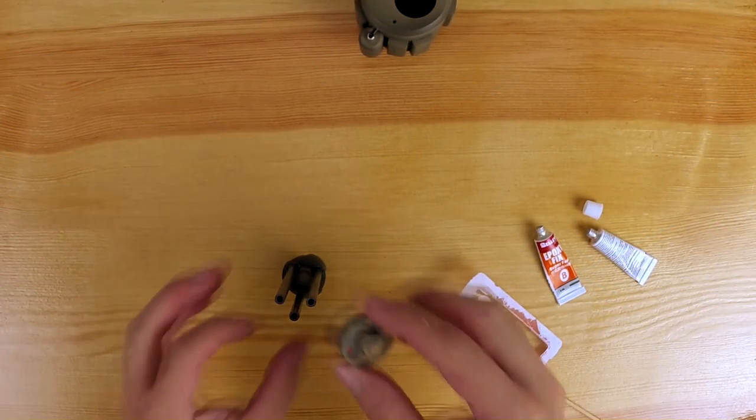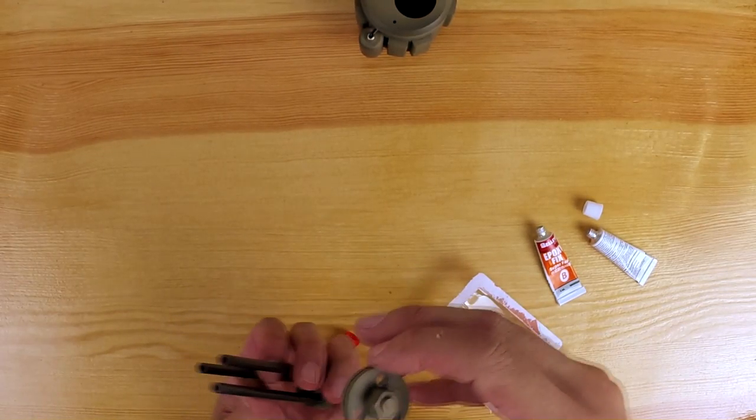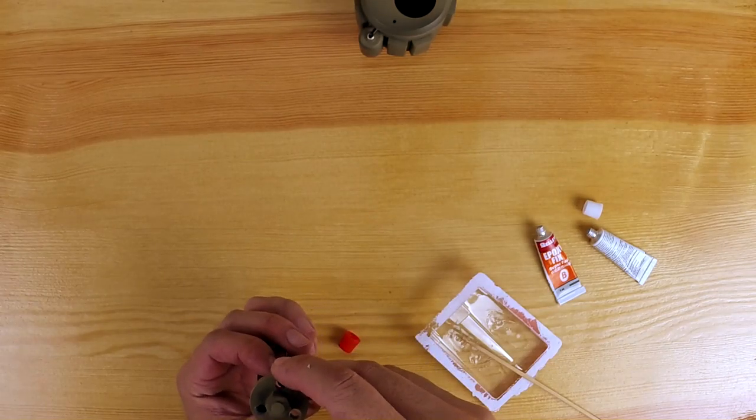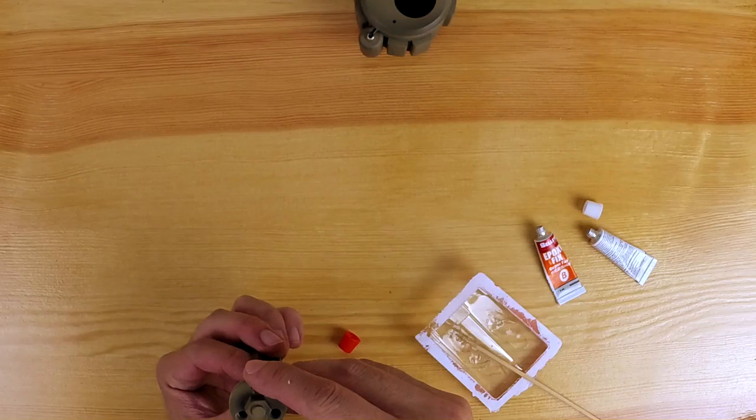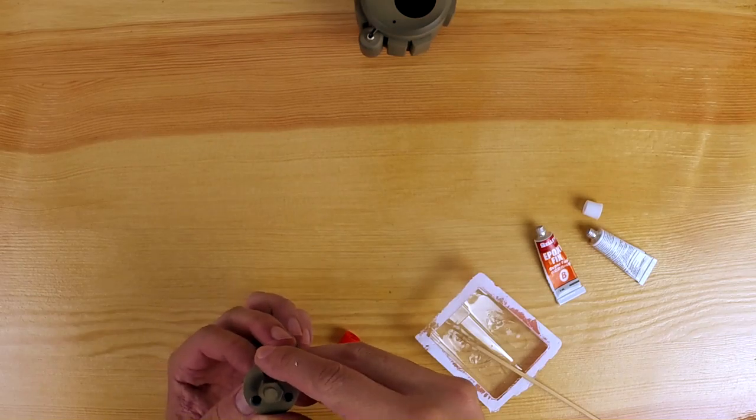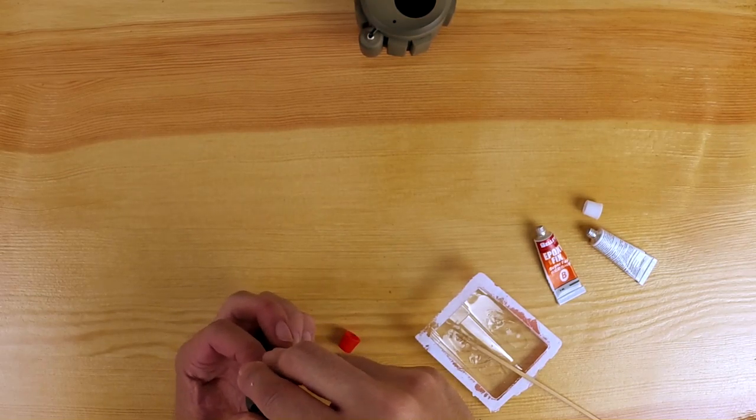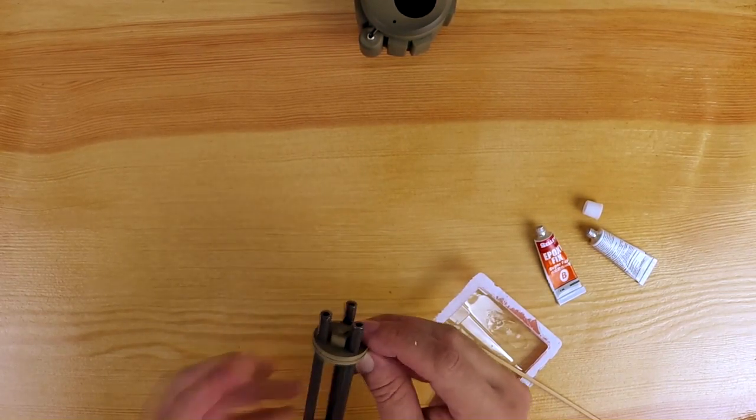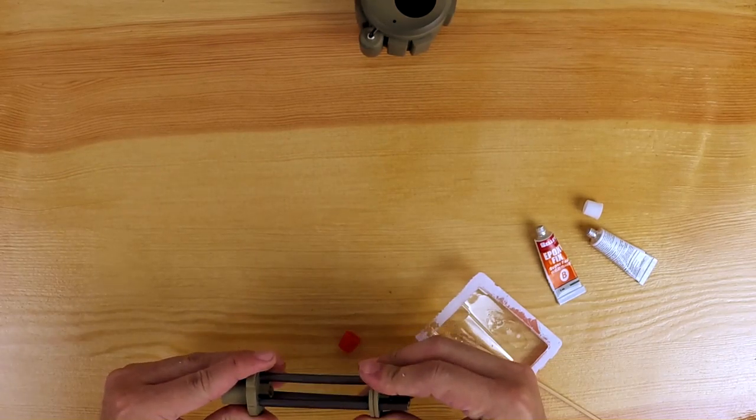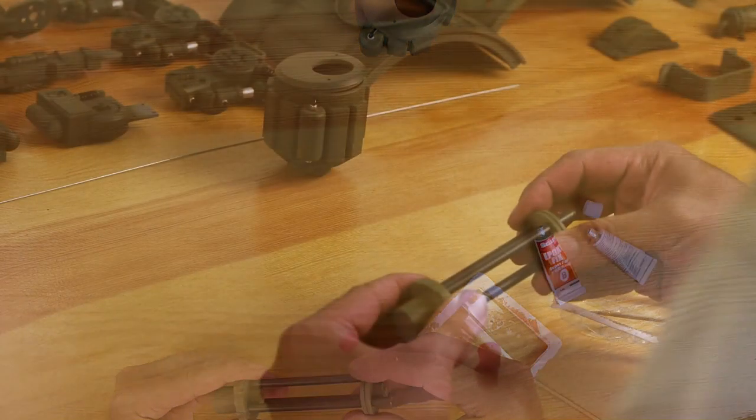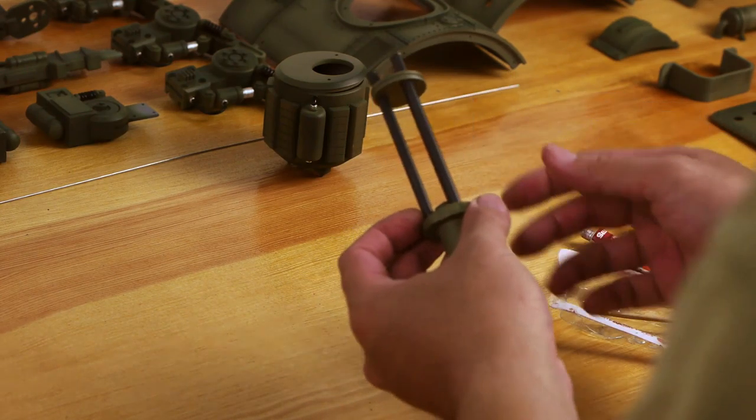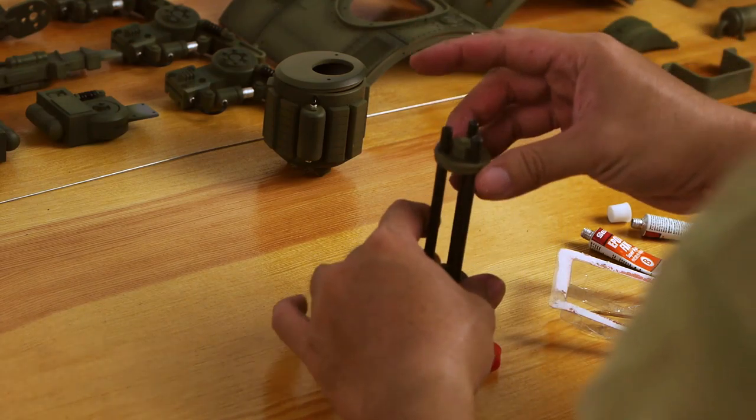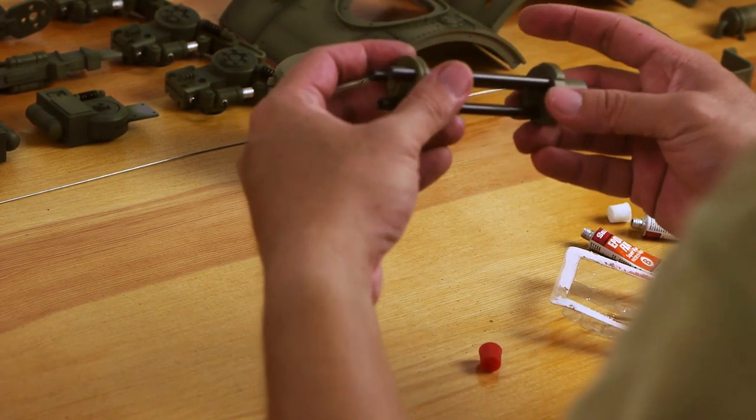So for the front holder, I do the same. I slathered the glue on the inside and I'm just sliding it into, sliding the three barrels into it. How far you push this down is really up to you. I just want to make sure that all three barrels are kind of parallel to each other. So yeah, with that we are done with this.